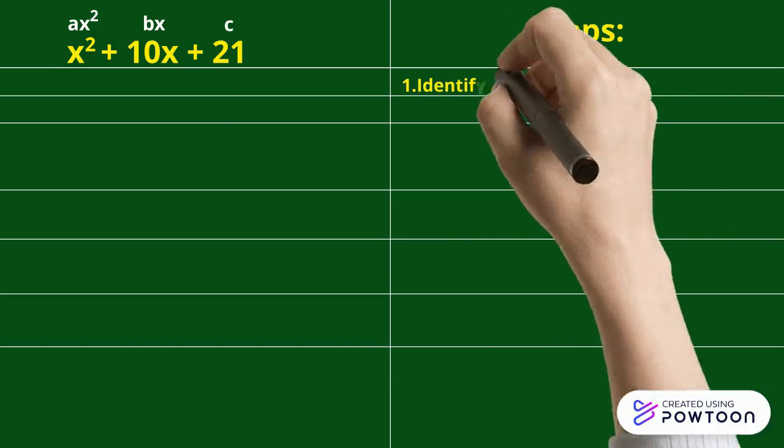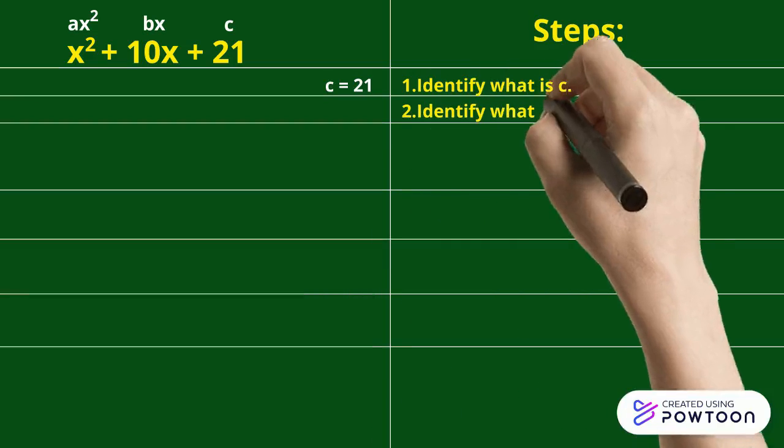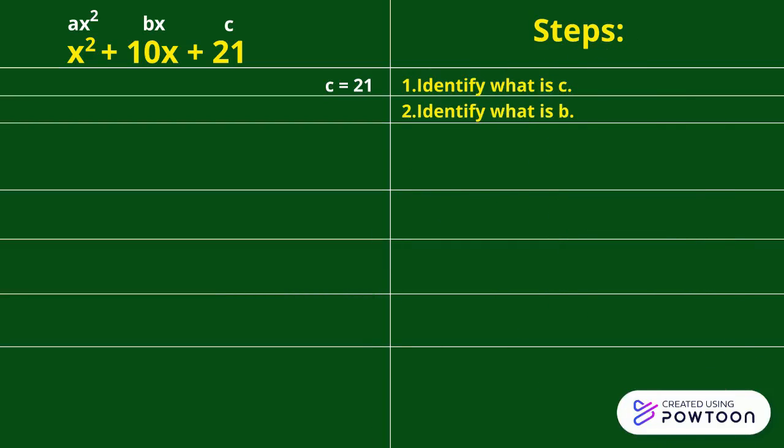First is we have to identify what is C. In our example, 21 is the value of C. Second is we have to identify what is B. In our example, 10 is the value of B.